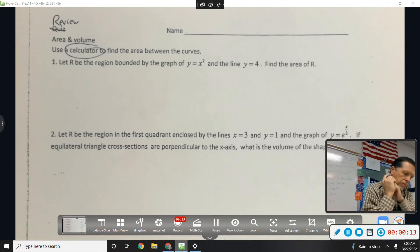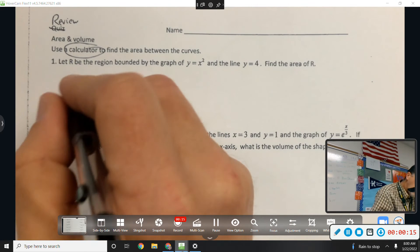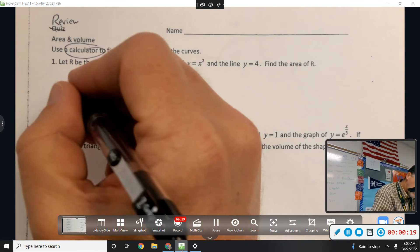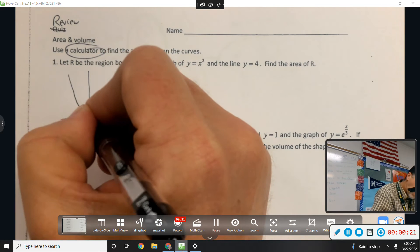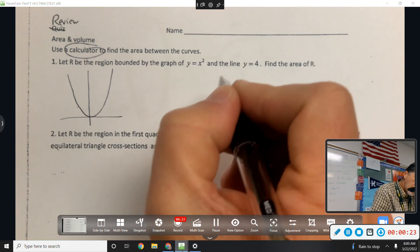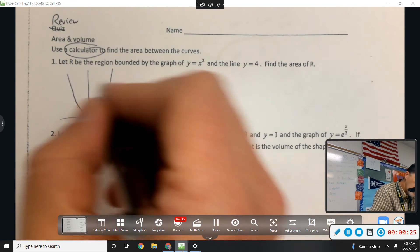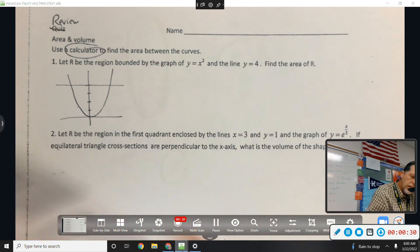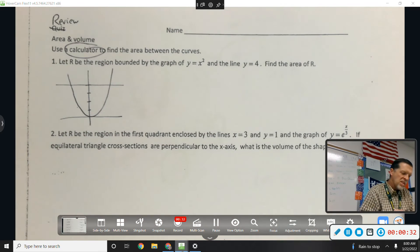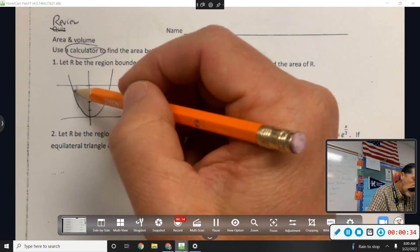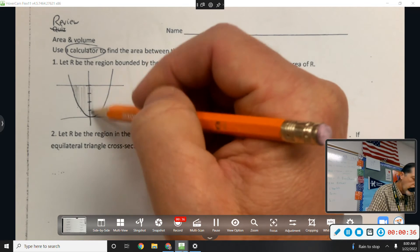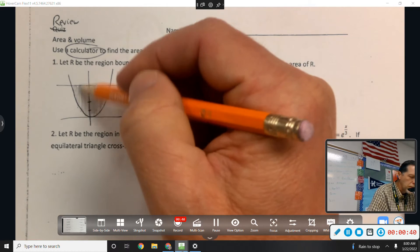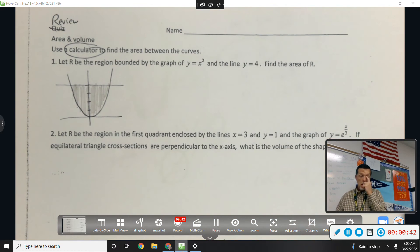Let R be the region bounded by the graph of y equals x squared. Okay, I know what that looks like. And the line y equals four. Okay, so this is not volume. This is area. This is supposed to be an easier problem, but we haven't done an area problem in a while.